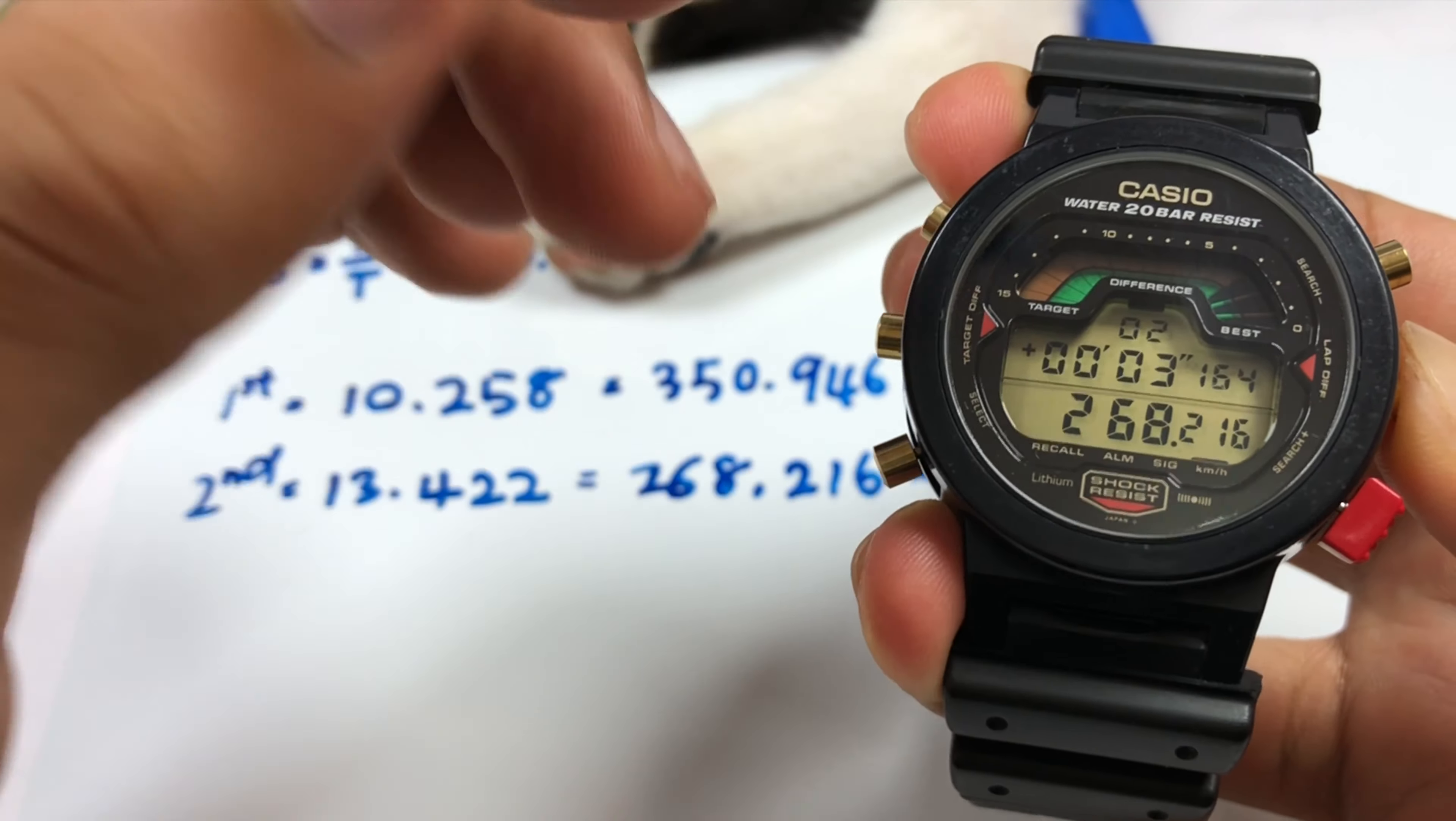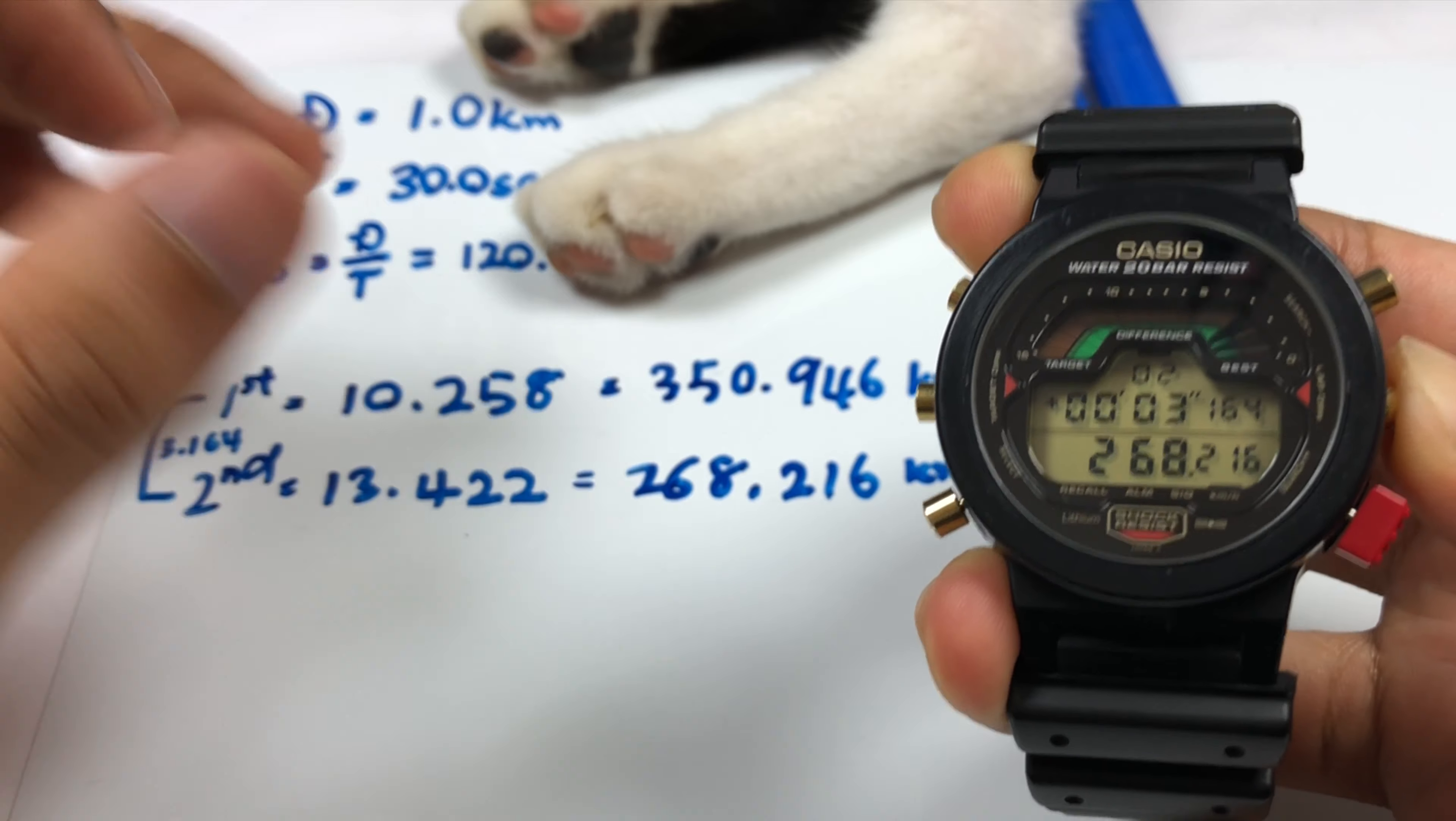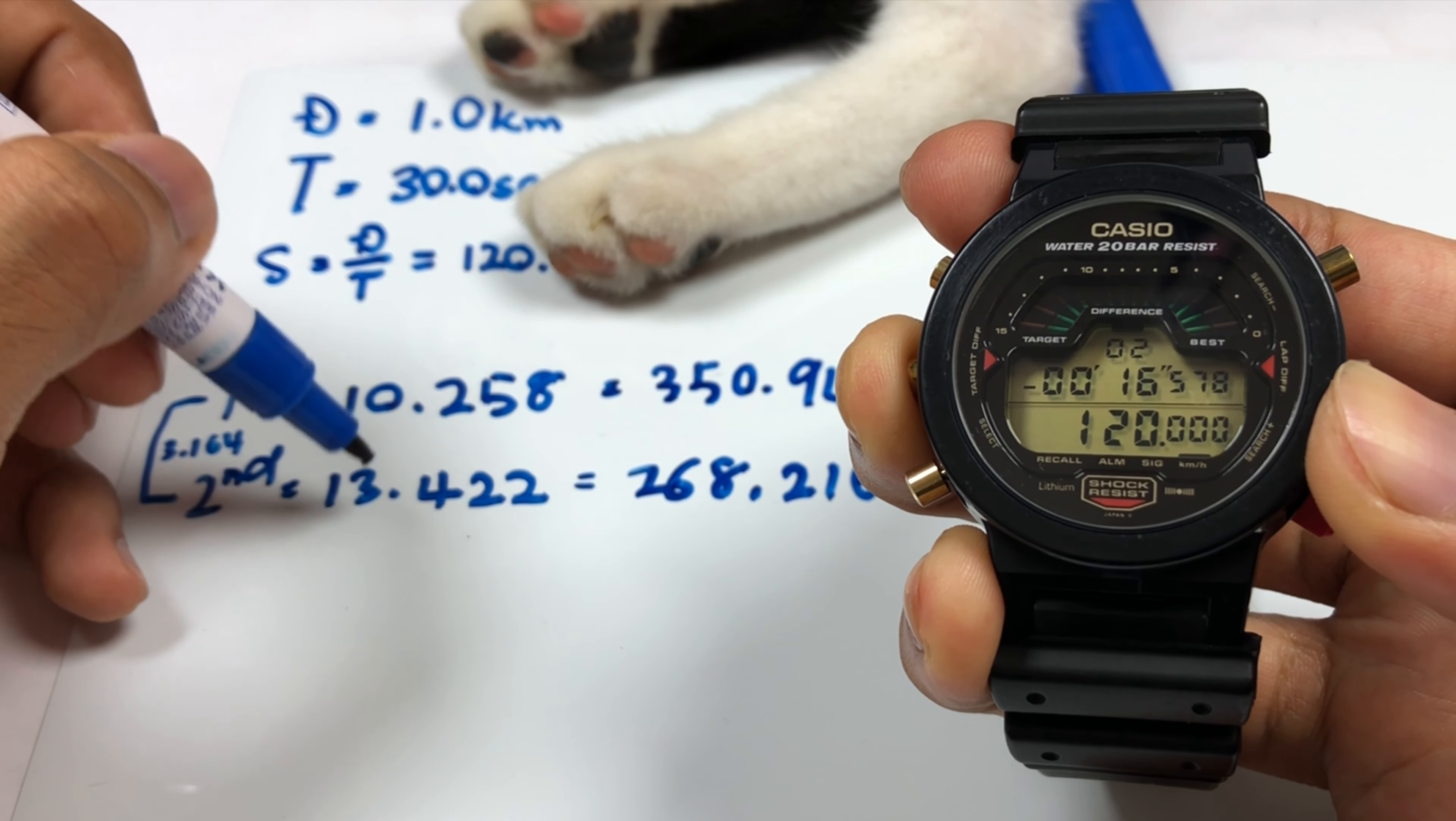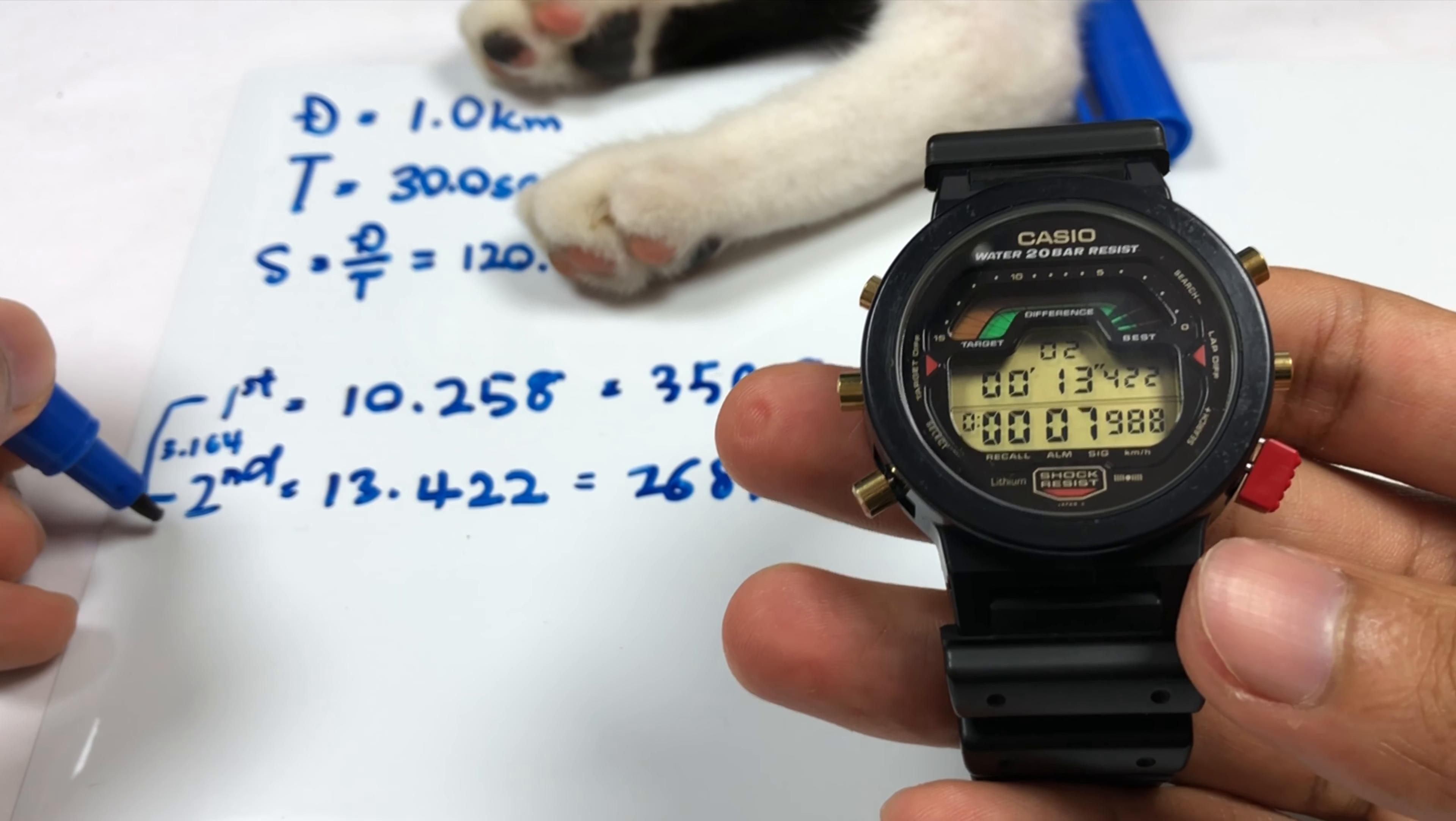The time difference is 3.164, which is the time difference between your first lap and your second lap. It's plus because this one is greater than the previous one. And 16.578 is the time difference between this lap towards your target time.